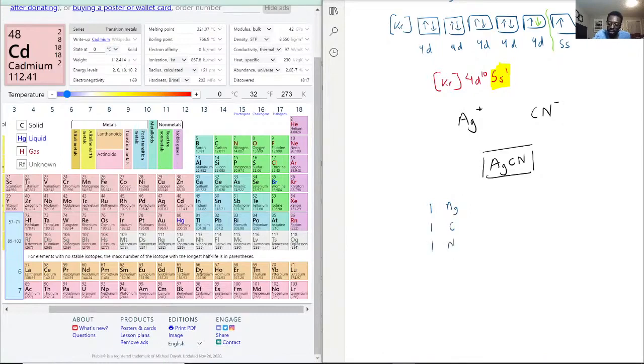So one silver times 107.87, carbon times 12.01, one nitrogen times 14.007, just going to equal each other. I like to show our steps so we're not missing anything, even though it may seem repetitive.